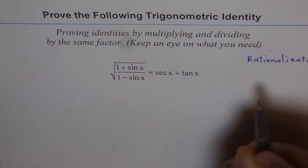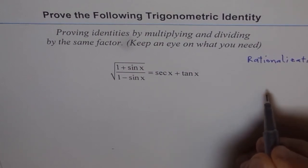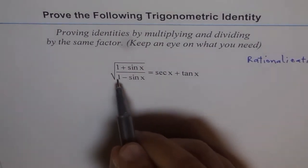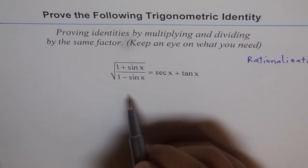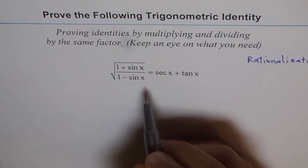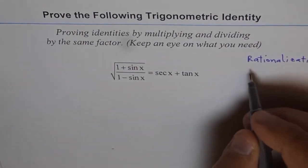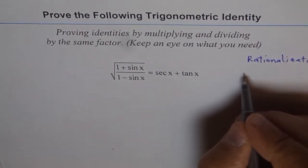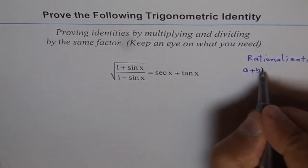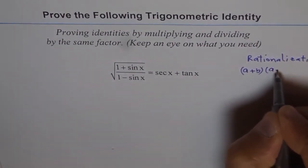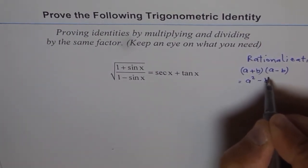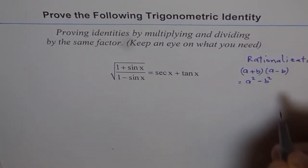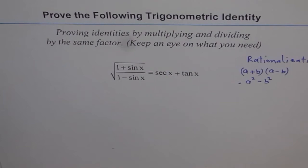What we do is we multiply and divide by the conjugate. In this case we will multiply and divide by 1 plus sin x square root. Once we do that, when you do a plus b times a minus b, what do you get? You get a square minus b square. That helps us to simplify our problem.